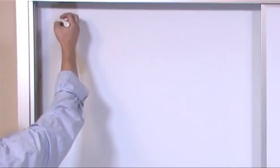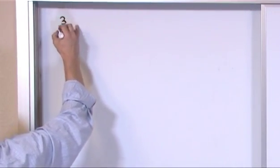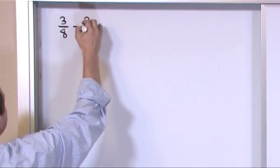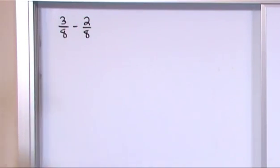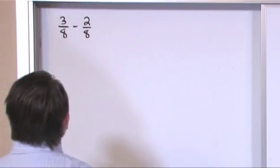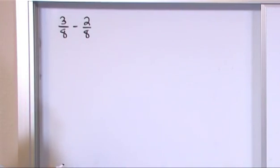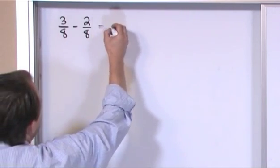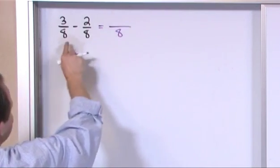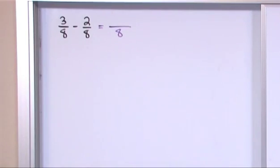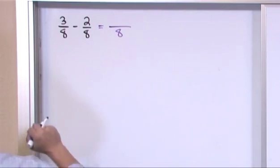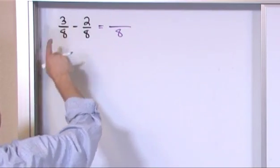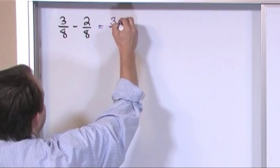So what if we have something like 3/8 minus 2/8? Well the first thing you do is check to see if your denominator is the same, and in this case it is the same because our denominator is 8. So basically what you do is you keep the denominator the same just like we did for addition. So that part of it is exactly the same.